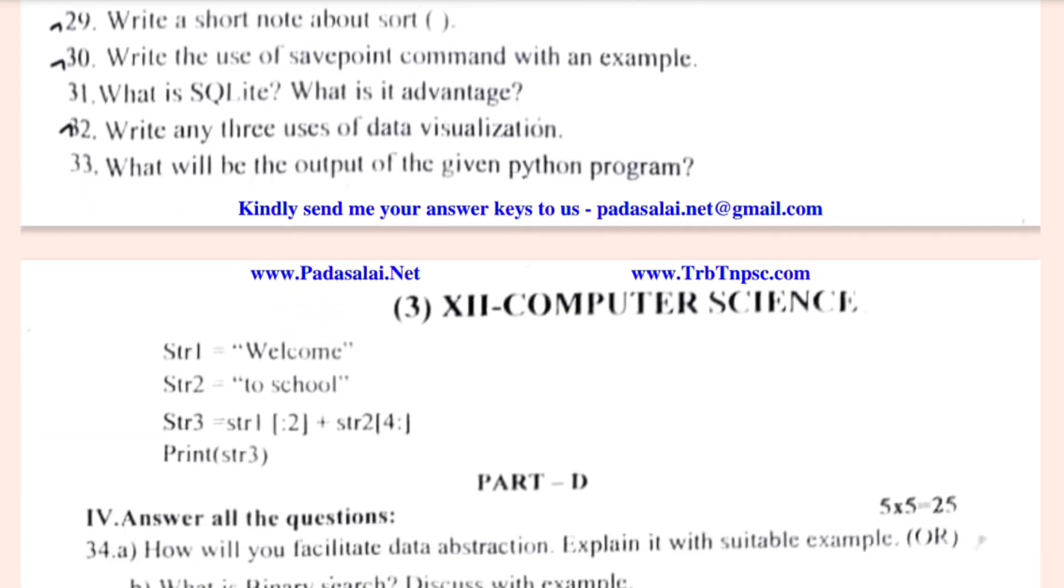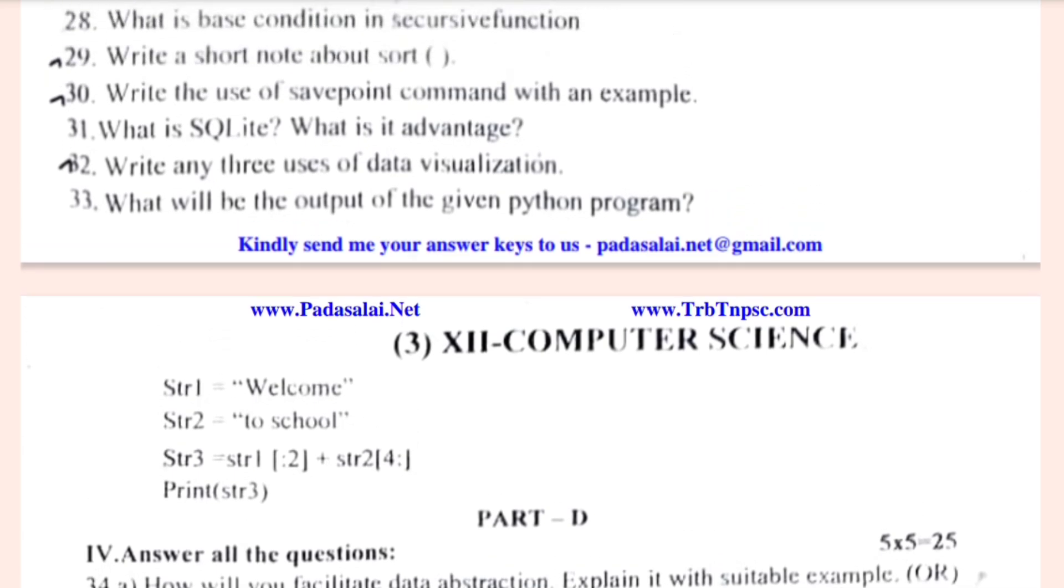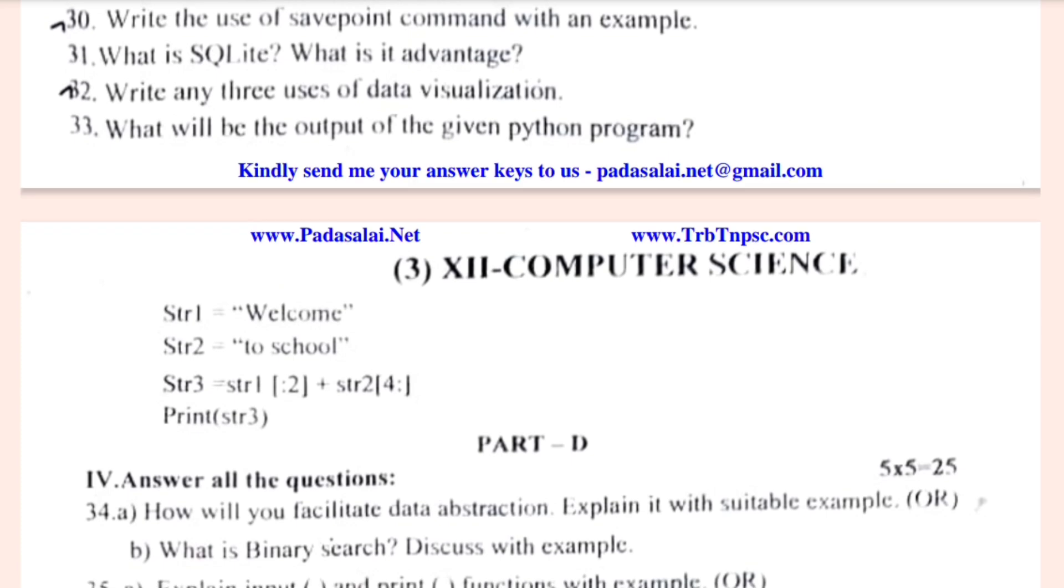The next question is Part D for five marks, twenty-five. You have to choose whatever choice you have. Thirty-four: How will you facilitate data abstraction? Explain it with a suitable example. Or, what is binary search? Discuss with example. Thirty-five.